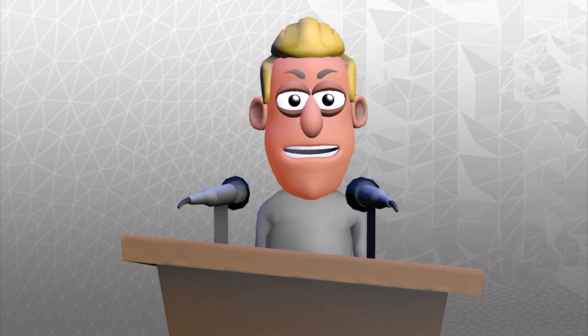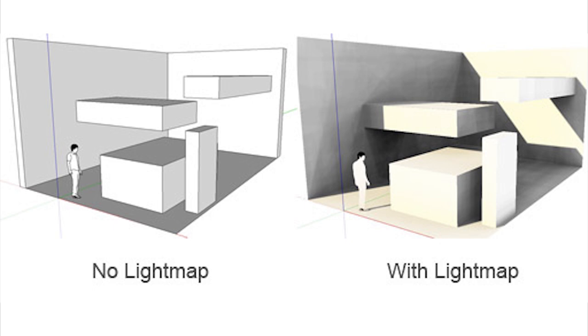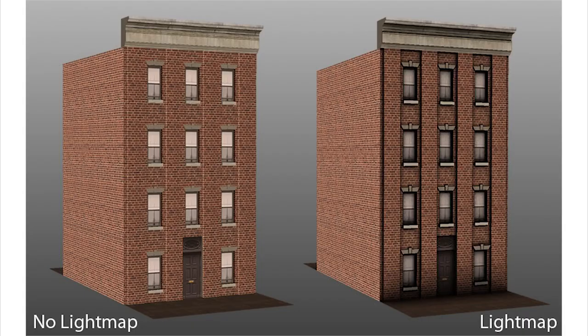Some of the rendering methods I've covered here could be used together to create very detailed scenes that will run in real time. In games, this can be achieved through the use of light maps. These are often used on the static elements of games such as terrain or architecture and they work by baking the lighting data straight onto the texture.